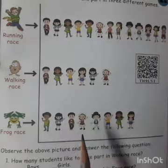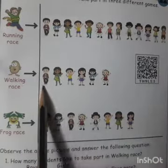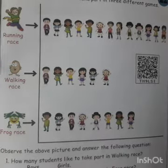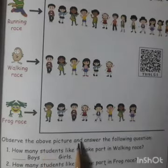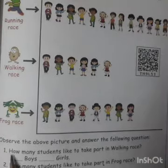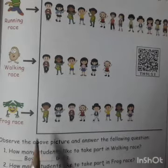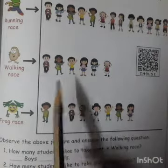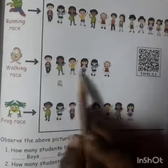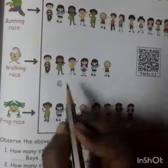Students, look at this picture. Some students are in running race. Some students are in walking race. Some students are in frog race. Observe the above picture and answer the following questions. How many students like to take part in walking race? How many boys are there? 2 boys. How many girls are there? 4 girls.